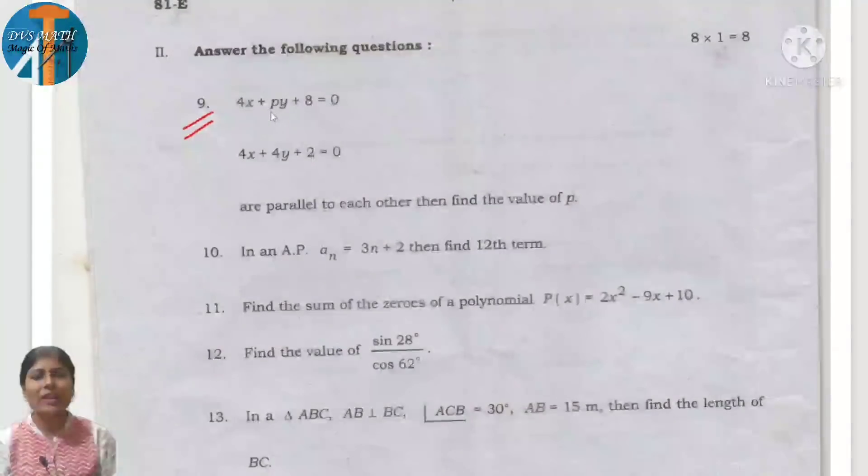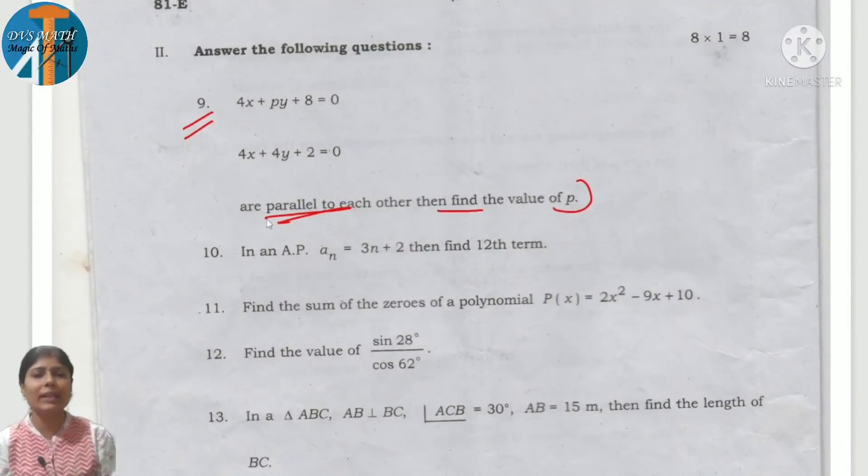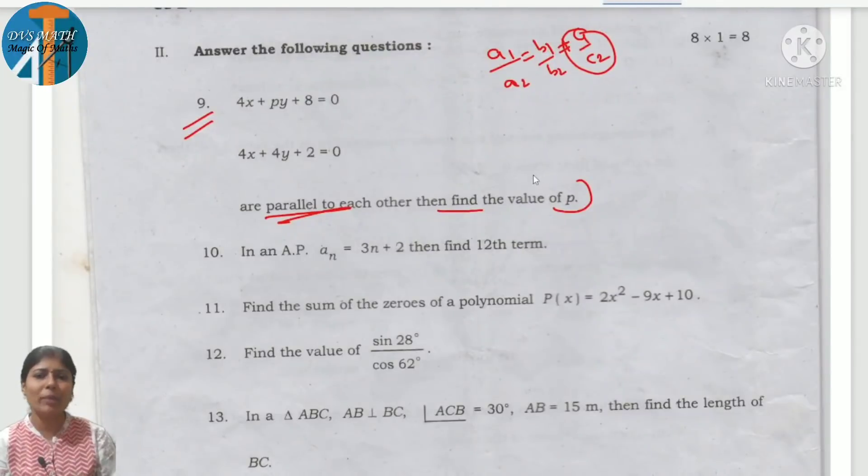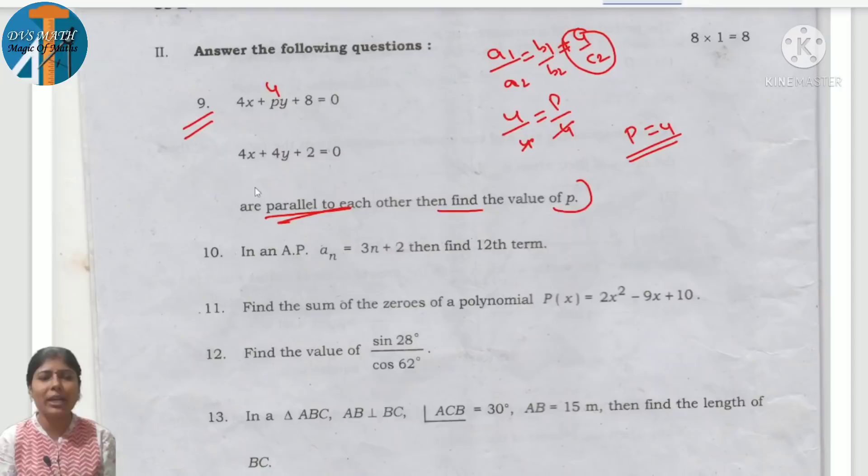Test questions cover 5 questions: quadratic, trigonometry, triangles, area related to circles, surface area and volume. This is ninth question. 4x plus py plus 8 equals 0, 4x plus 4y plus 2 equals 0 are parallel to each other, then the value of p is. For parallel lines: a1 by a2 equals b1 by b2. Substitute: 4 by 4 equals p by 4. 4 cancel, so p is equal to 4.